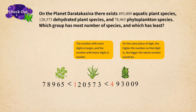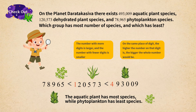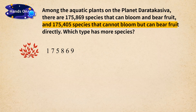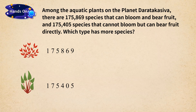The aquatic plant has the most species, while phytoplankton has the least species. We can also learn from the encyclopedia that among the aquatic plants on planet Deratakaziva, there are 175,869 species that can bloom and bear fruit, and 175,405 species that cannot bloom but can bear fruit directly. Which type has more species?